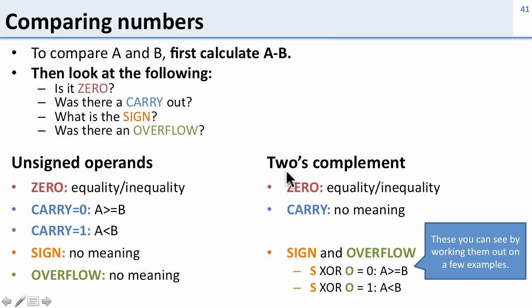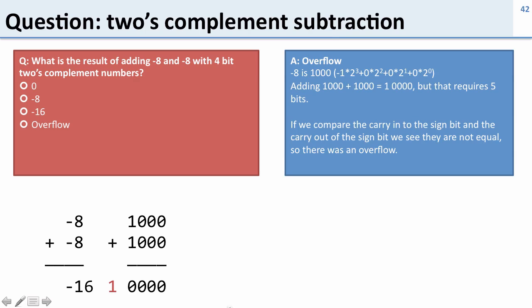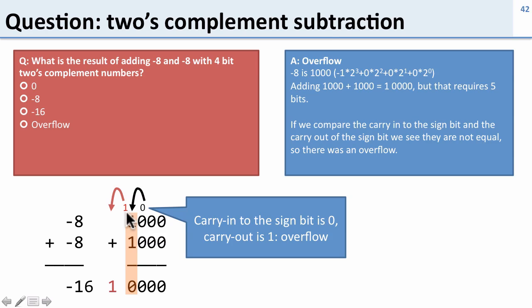The thing to remember is that when comparing 2's complement numbers you need to look at the sign and overflow together, and zero tells you whether they're the same. Here's a question: what's the result of adding minus 8 and minus 8 with 4-bit 2's complement numbers? It's going to give us an overflow. Here's the result: we get minus 16, but with only four bits we end up with 0 0 0 0, which is positive zero. The result has a different sign from the inputs, confirming overflow. We can also see this by looking at the carry bits: the carry going into the sign bit is 0 and the carry going out is 1 — they differ, so we have an overflow.